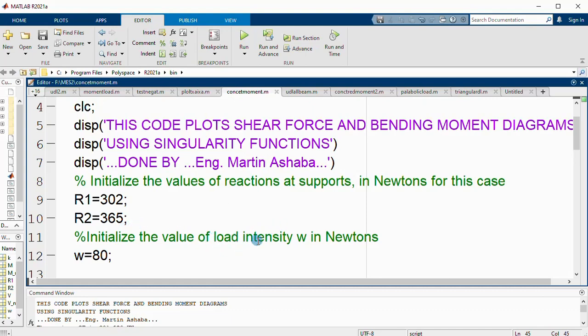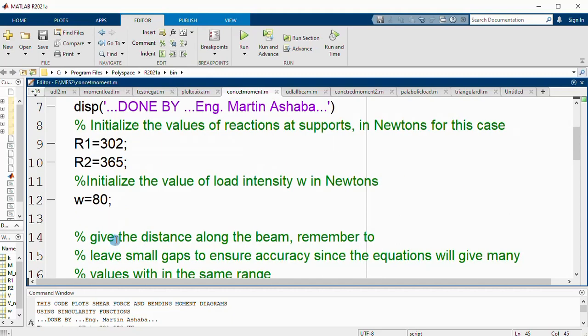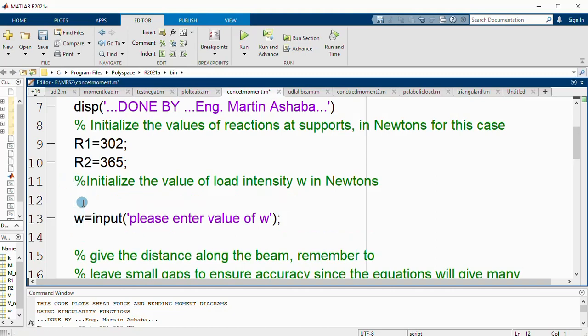We need to also initialize the value of load intensity W in newtons per meter. W equals 80 newtons. In the future, we could say W equals input, please enter value of W. When I put in the value of W, it automatically stores it in this variable W and will use it in the computations. Let us see. We will implement that one later, so let us keep W as 80 and keep this as a comment.